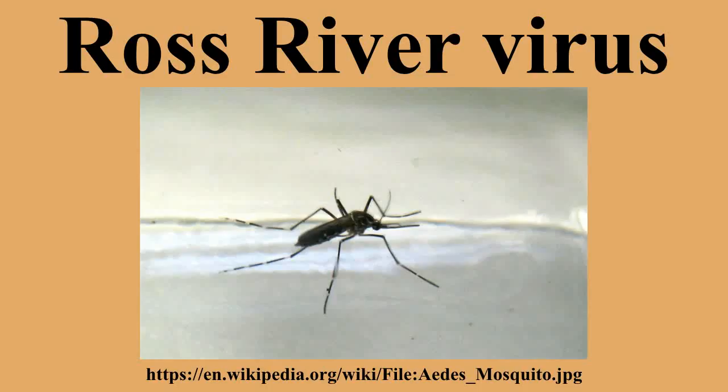Ross River virus is a small encapsulated single-strand RNA alpha virus endemic to Australia, Papua New Guinea, and other islands in the South Pacific. It is responsible for a type of mosquito-borne, non-lethal but debilitating tropical disease known as Ross River fever.